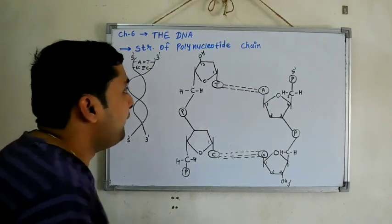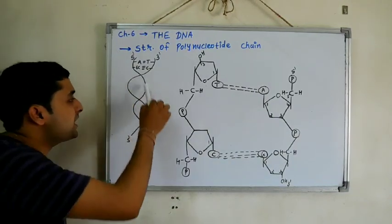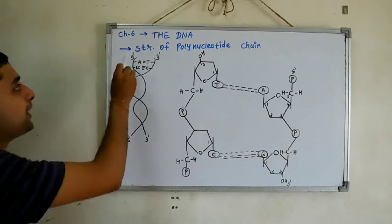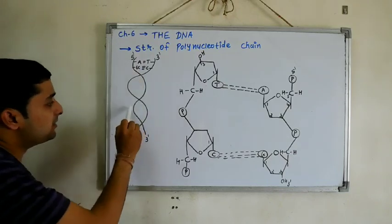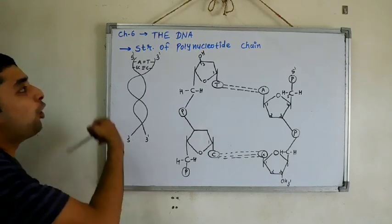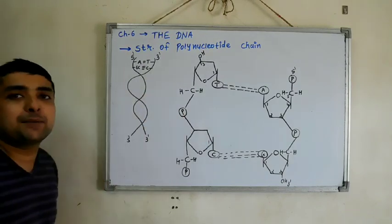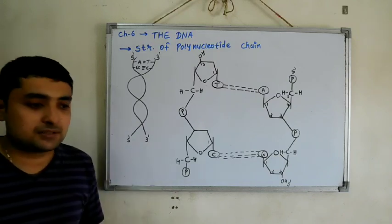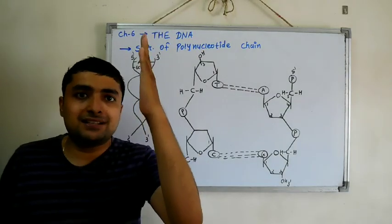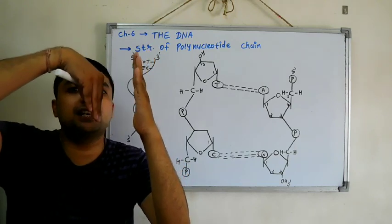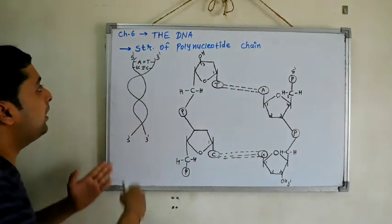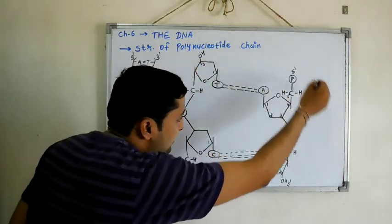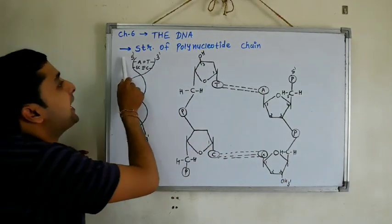Now, we already know that DNA has a double helical structure. Normally we draw the structure like this: one end is 5 prime and another end is 3 prime, and the opposite strand runs 3 prime to 5 prime. In short, DNA has a double helical antiparallel structure, meaning one strand is in straight manner and another one is in opposite and reverse manner. Both strands are arranged in antiparallel fashion.